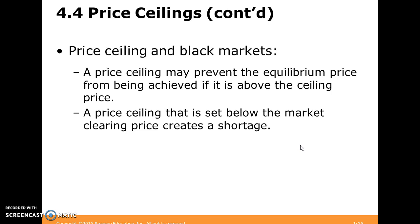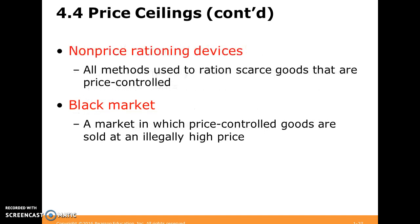Sometimes a price ceiling can create a black market — an underground market — and it's going to create a shortage. A black market is one in which price-controlled goods are sold at an illegally high price. Why are they illegal? Because we have a government-mandated maximum price. But you could argue, perhaps correctly, that a black market is just trying to have the price reach an equilibrium value — it's meeting demand.